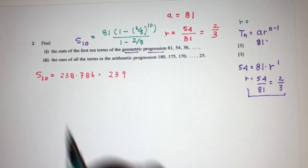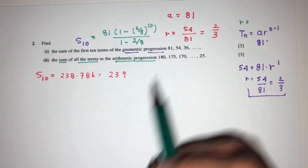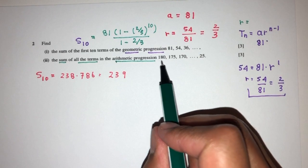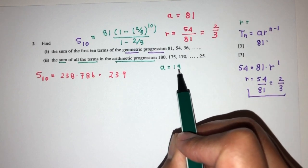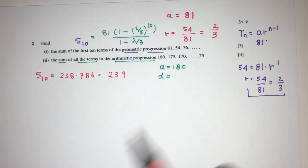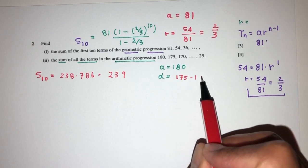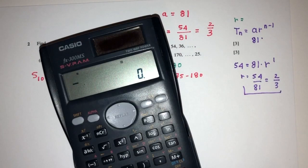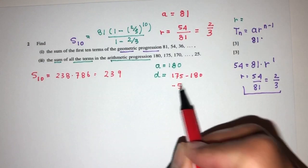Now for part 2, we have to find the sum of all the terms in this arithmetic progression. Now as you can see, this is the progression that we have. We realize the value of A, which is the first term is 180. Now, what is the common difference? As you can see, it will be 175 minus 180, which is minus 5. So the value of D will be minus 5.